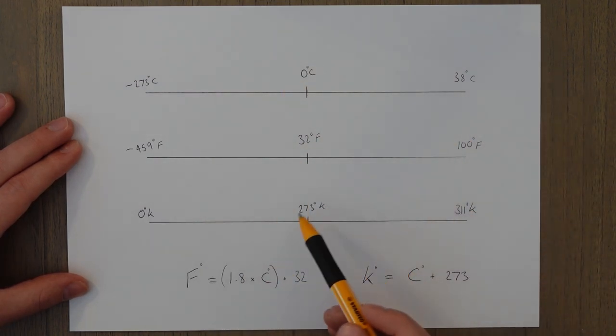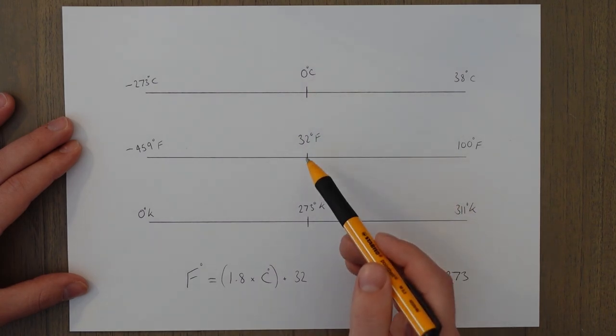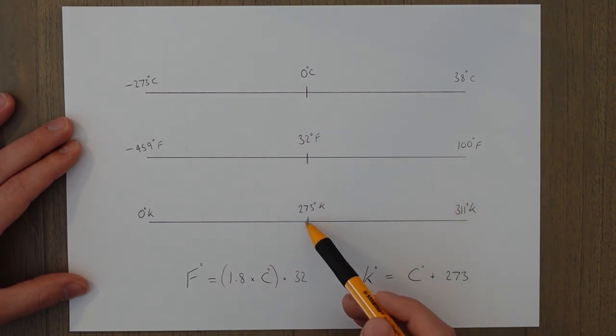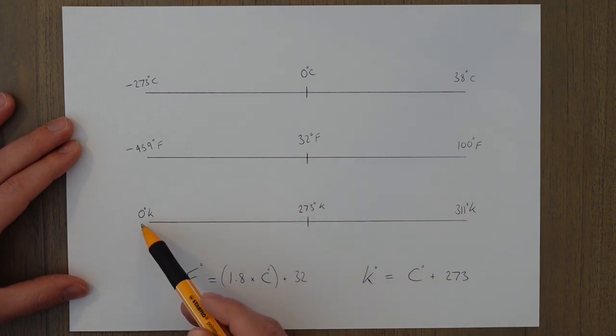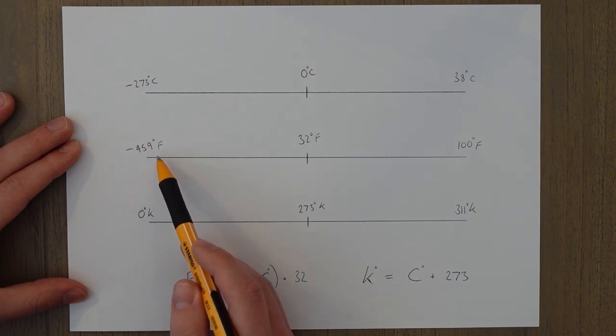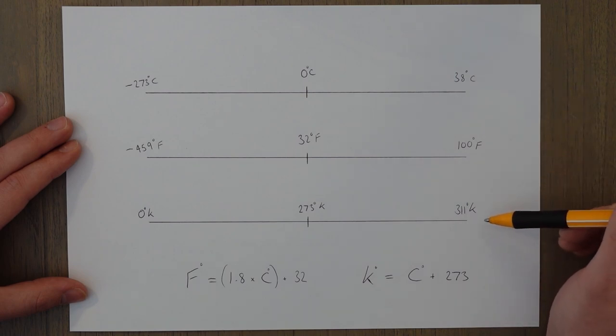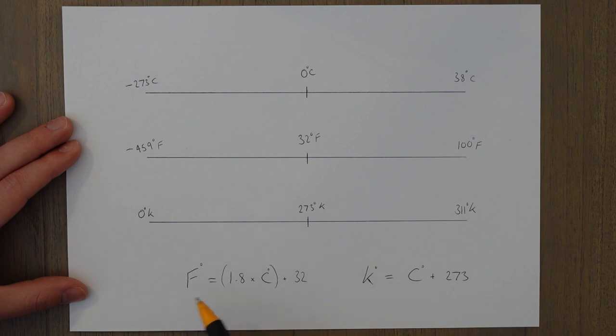I've just picked a few significant numbers here. At 0 degrees Celsius we've got 32 degrees Fahrenheit and 273 degrees Kelvin. 100 degrees Fahrenheit is 38 degrees Celsius or 311 Kelvin. The conversion from Celsius into Fahrenheit is 1.8 times the Celsius plus 32. Kelvin is Celsius plus 273.